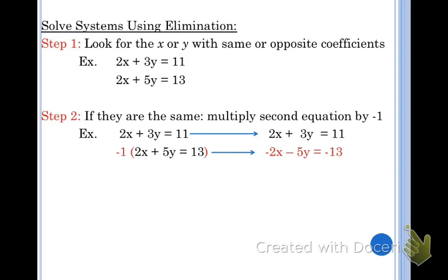If they are the same, I want to multiply the second equation by negative 1. You can actually multiply the first equation, but I just always do it the exact same way. So I multiply the second equation by negative 1. Look carefully, because I multiply first the 2x and I got negative 2x. Then I multiply the 5y, I got negative 5y. Then I multiply the 13. That's the number one thing people do wrong—they forget to multiply every single thing on both sides of the equal sign by negative 1. And I got negative 13.